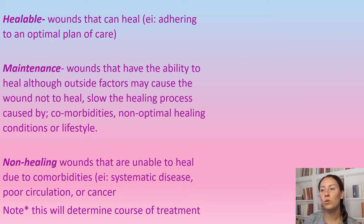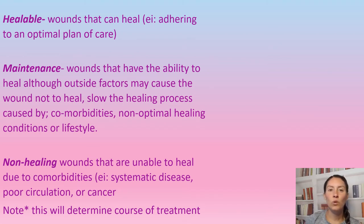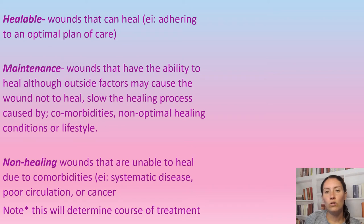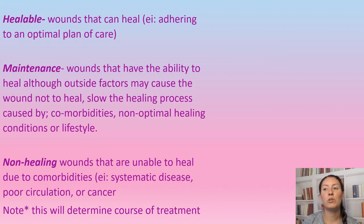A healable wound is a wound that can heal — the patient is adhering to the optimal plan of care and their body has the ability to heal with nothing preventing it. A maintenance wound is a wound that has the ability to heal but there's something preventing it or slowing it down, such as comorbidities, non-optimal healing conditions, or lifestyle. For example, a patient with a venous leg ulcer who removes their compression bandaging as soon as they leave the clinic — that wound is not going to heal optimally.